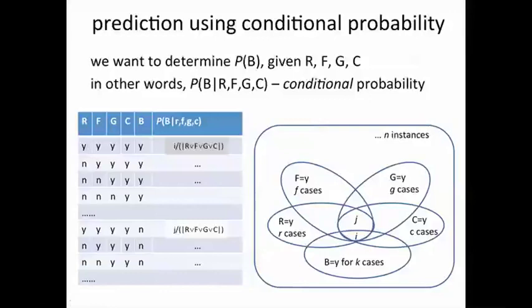Let's look at this pictorially. Suppose we have n instances or n historical queries. In r cases, they had the keyword red. In f cases, they had the keyword flower. Similarly, g for gift and c for cheap. And for k cases, there was actually a buy action. And for n minus k cases, there was not a buy action.